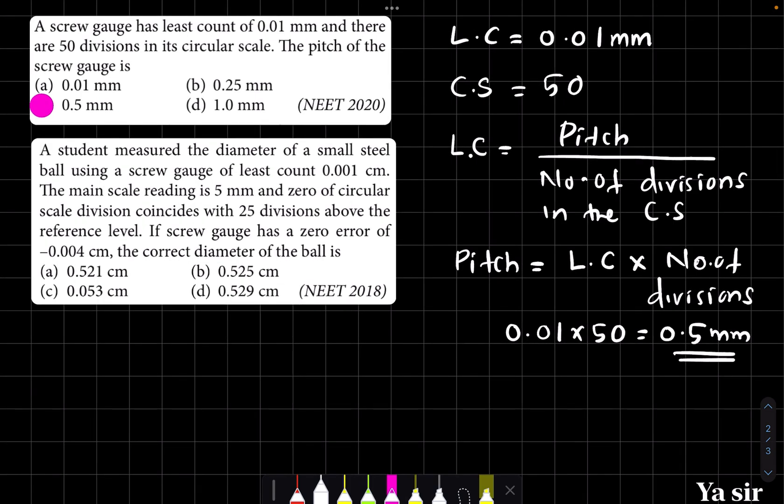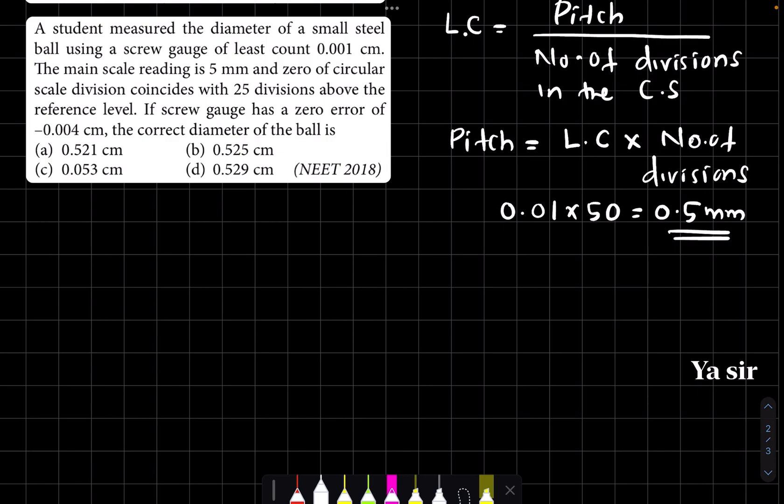Next question: a student measured the diameter of a small steel ball using a screw gauge of least count 0.001 centimeter. The main scale reading is 5 millimeter, and the zero circular division coincides with 25 divisions above the reference level. Additionally, the screw gauge has a zero error of 0.004 centimeter.